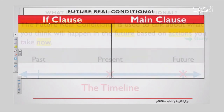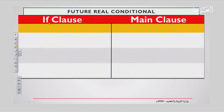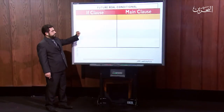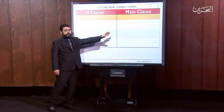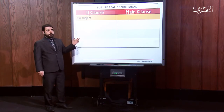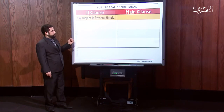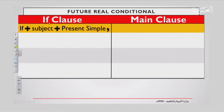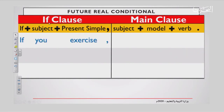Let's take a look at how it is formed. We have two clauses: the if-clause and the main clause. We start with 'if' plus subject plus present simple, then a comma — do not forget the comma — then subject plus modal plus verb, full stop. For example: 'If you exercise, you will be fit.'